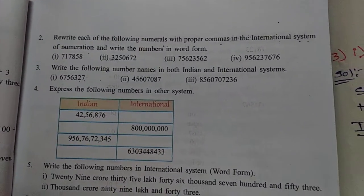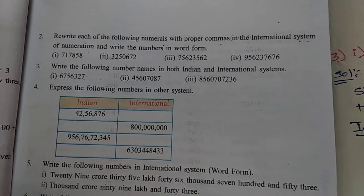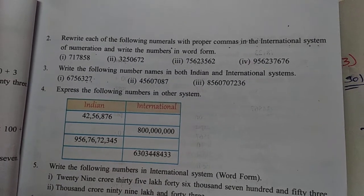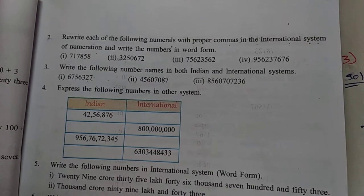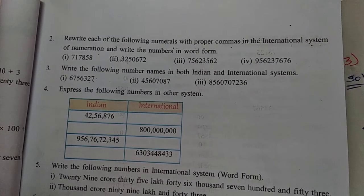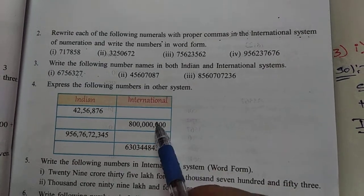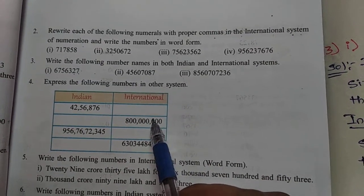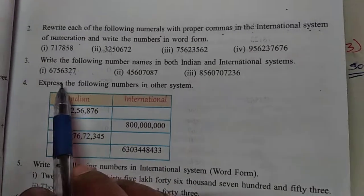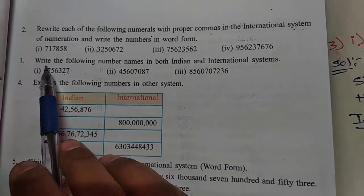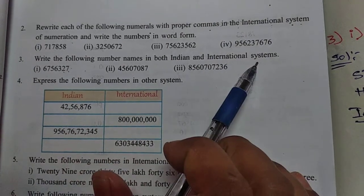Hi guys, welcome to my channel. Please subscribe to my channel and click the bell icon. In this video I will explain about sixth class math, first chapter: Numbers All Around Us, Exercise 1.3, third and fourth problems. I will explain in this video; the first two problems are already explained in the previous videos on my channel. Third one: write the following number names in both Indian and International system.